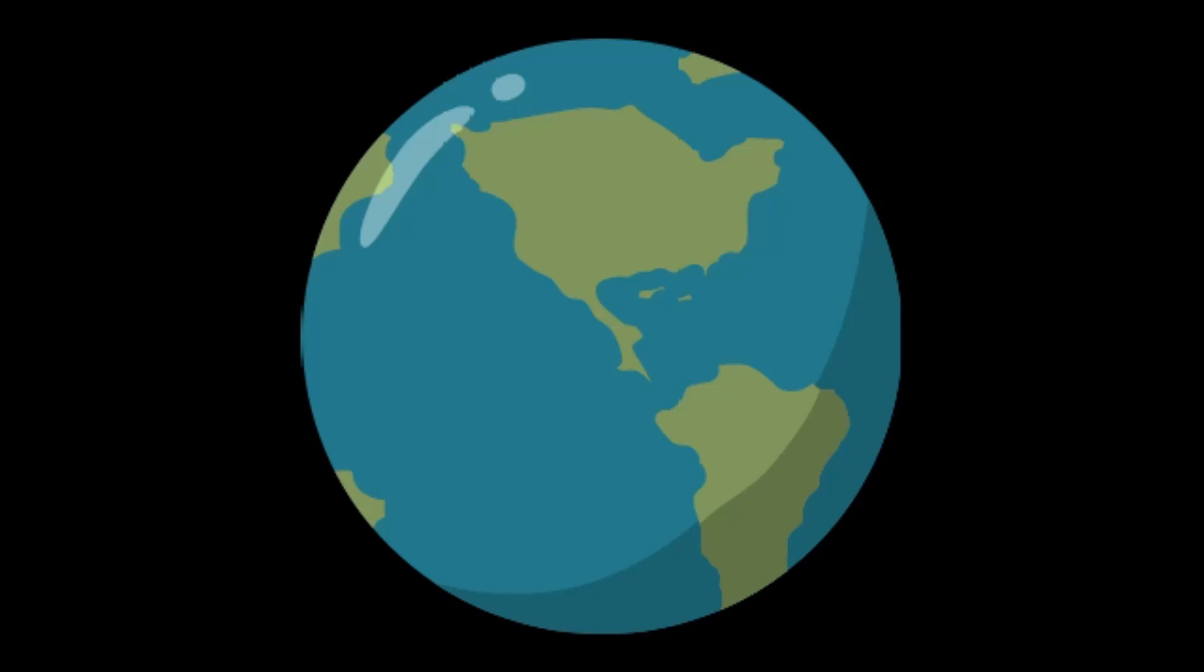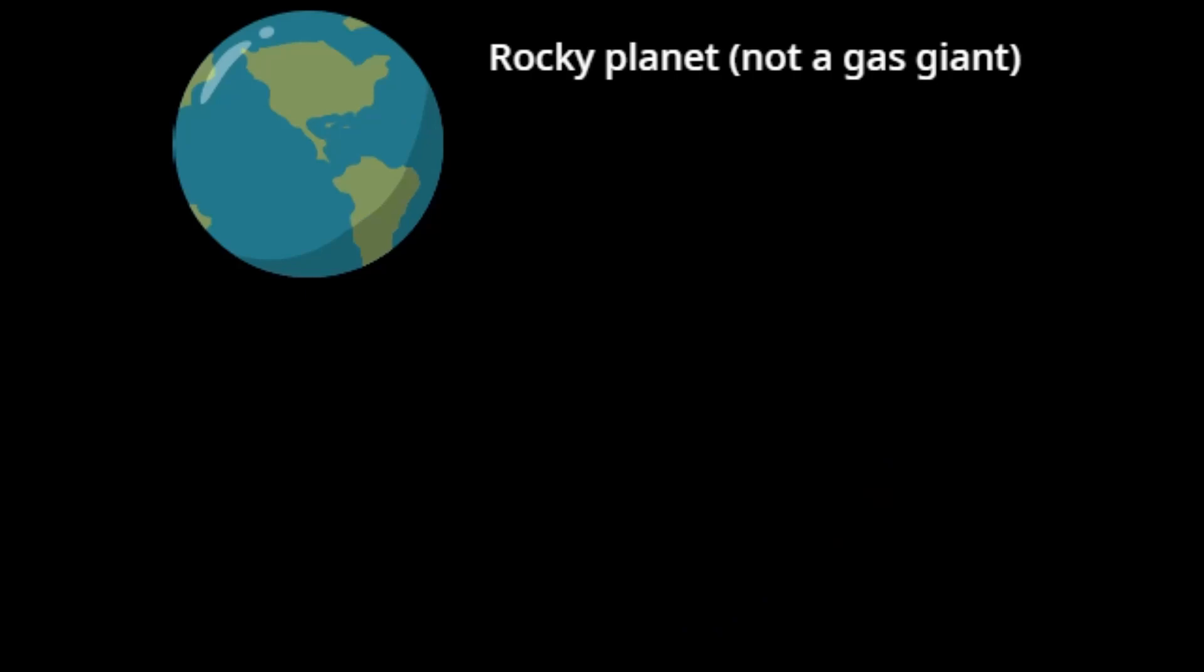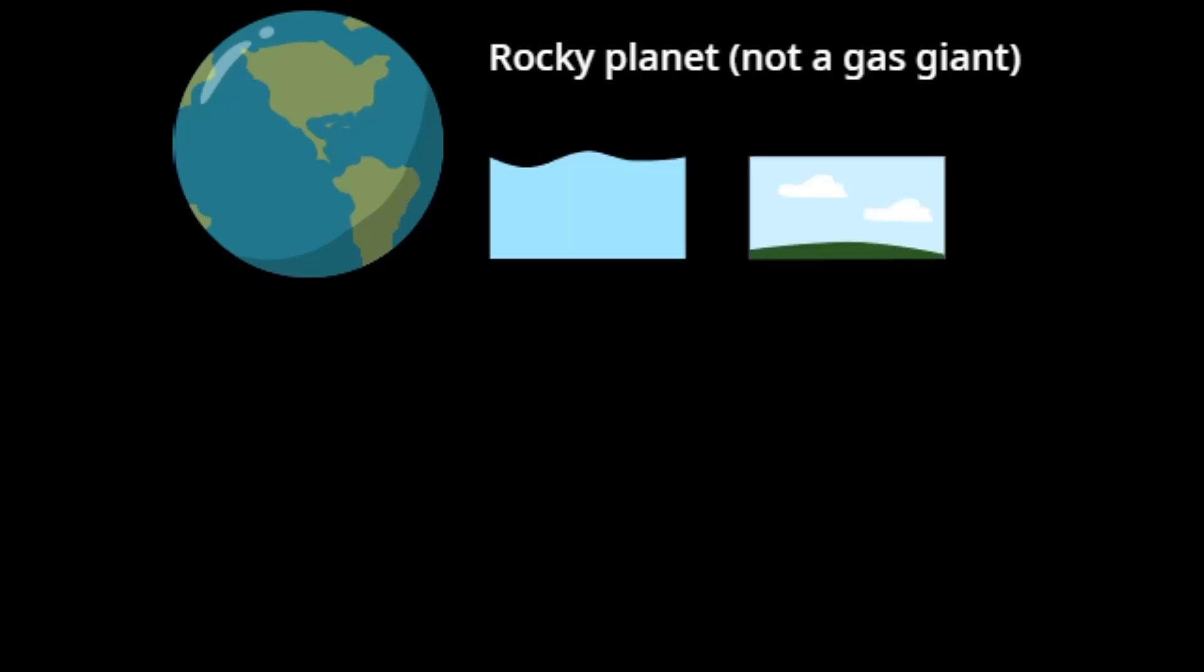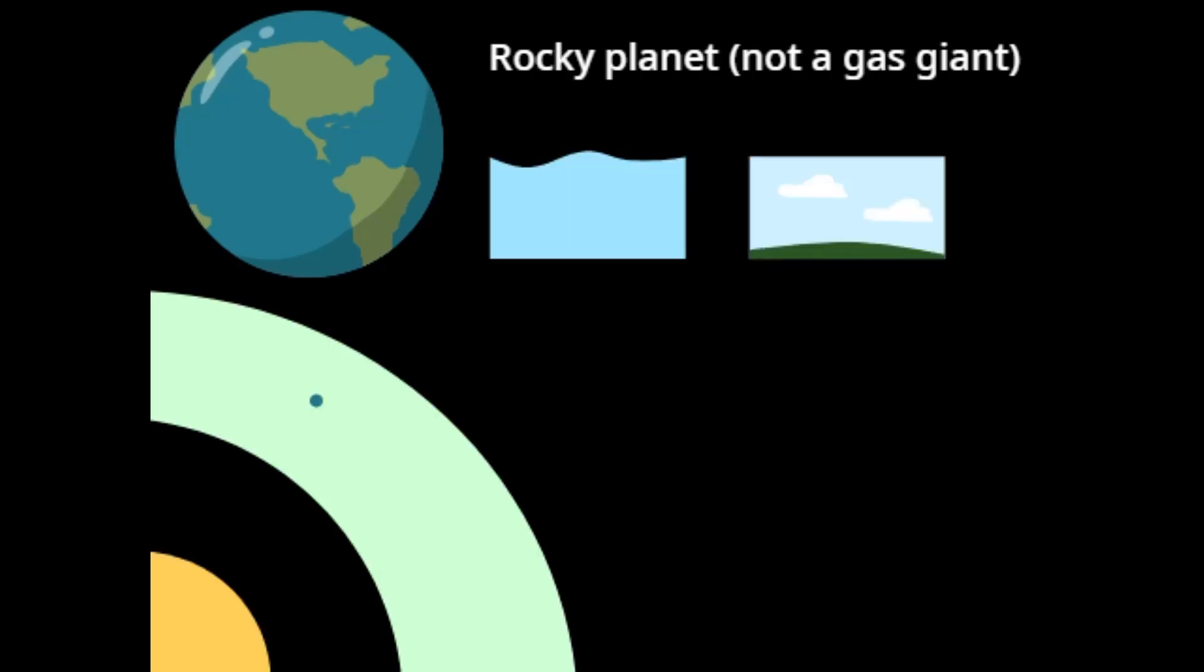Let's look at Earth to understand what exactly we're looking for. Earth is a rocky planet with water and an atmosphere. It is located in the habitable zone of the solar system, meaning an area exactly the right distance from the sun to potentially support lifeforms. The sun itself is also an important factor, as what is considered a habitable zone is relative to its mass and heat.